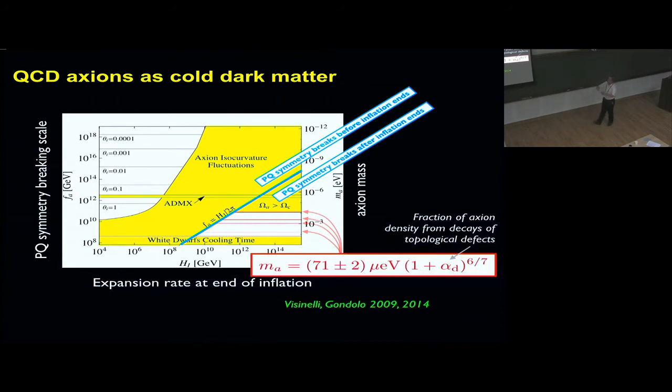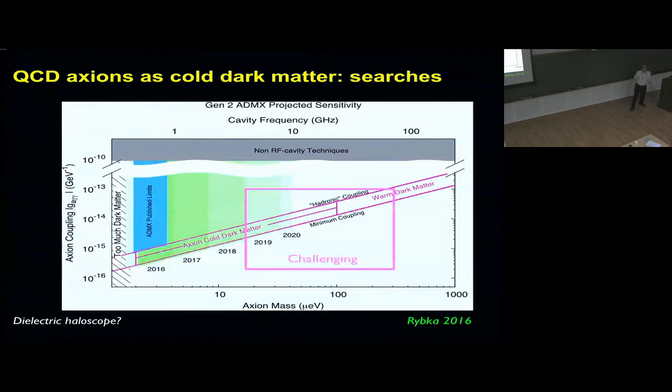The next generation ADMX will get closer to the actual range, but new techniques will be needed in the future. This is the range of masses where we think the QCD axion would be cold dark matter, and this is challenging. This is where ADMX is sitting, and next generation ADMX will get into this in the future. This 2020 is the year mark.